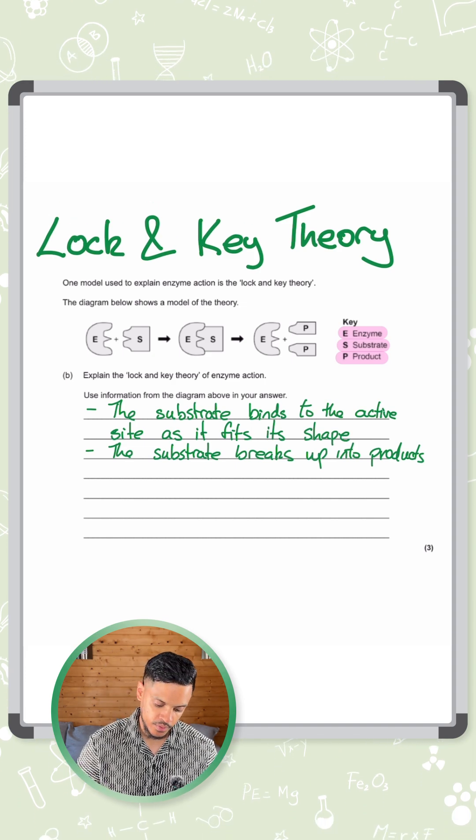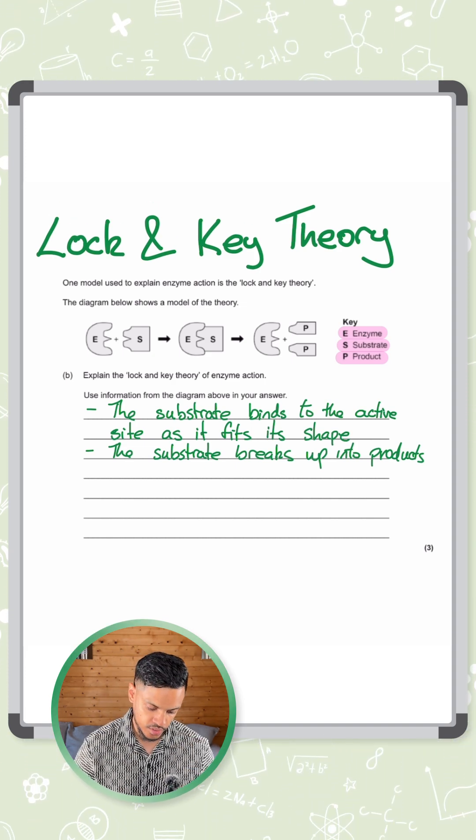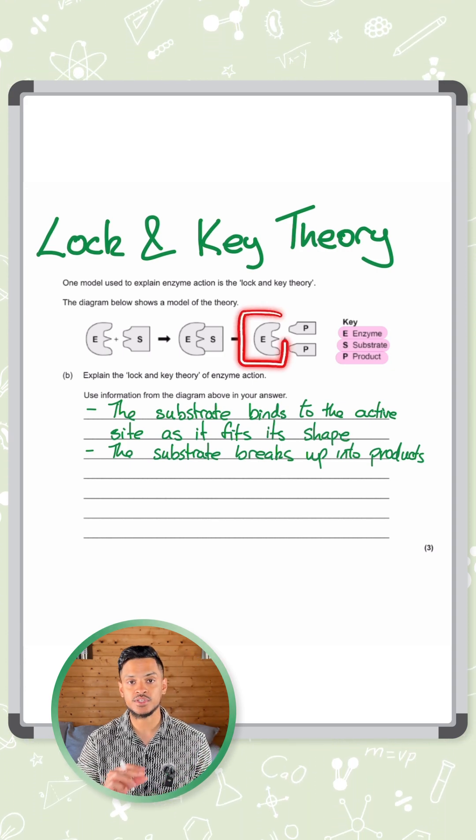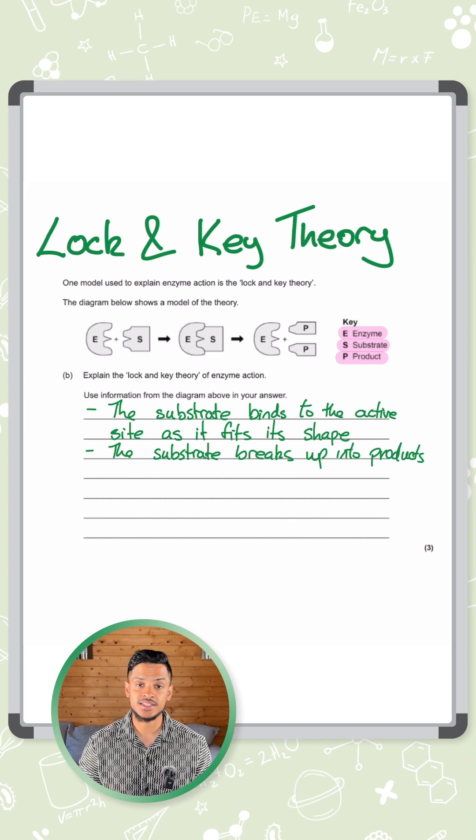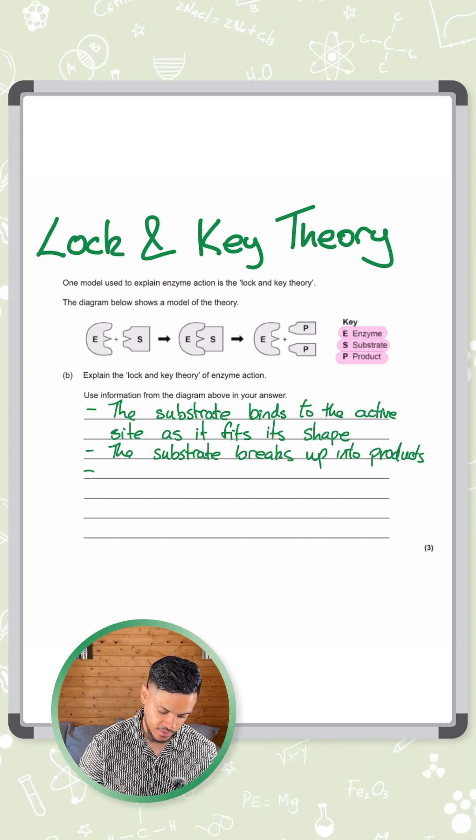Now how do we get the third mark? Well these products leave so you can either say the products are released or you could talk about the enzyme itself. Once the products are released you can see the enzyme is completely unchanged. That means it can take in another substrate after the products leave. Any of those will get you that third mark.